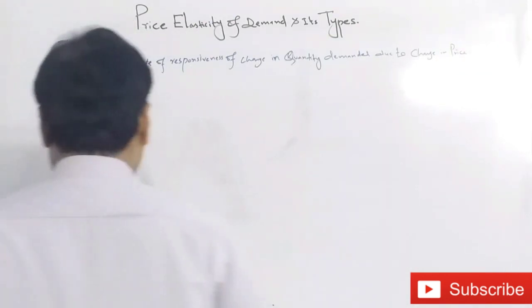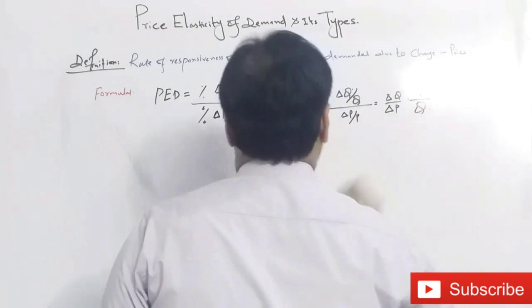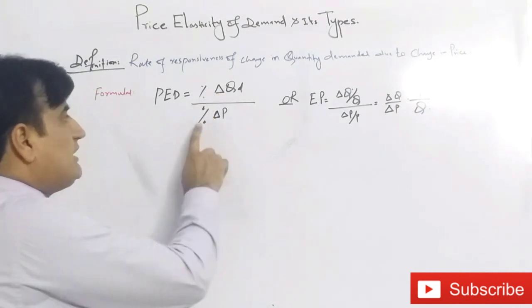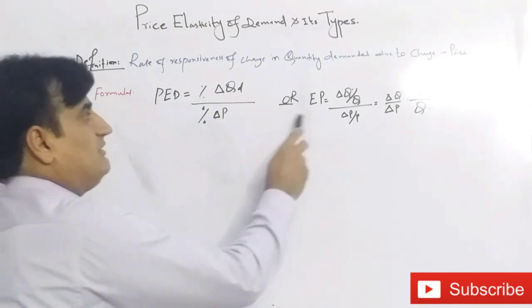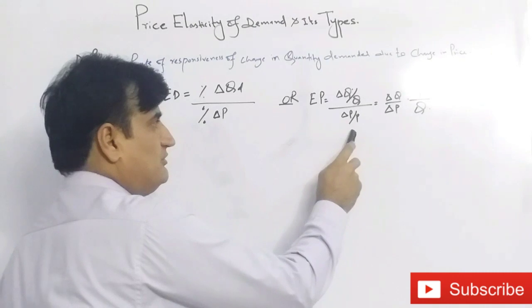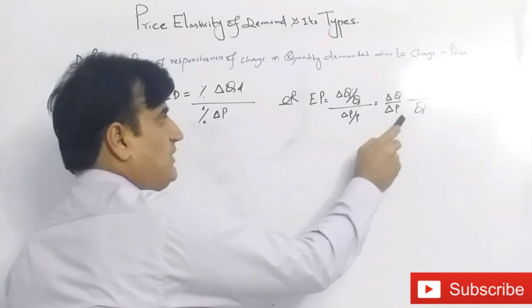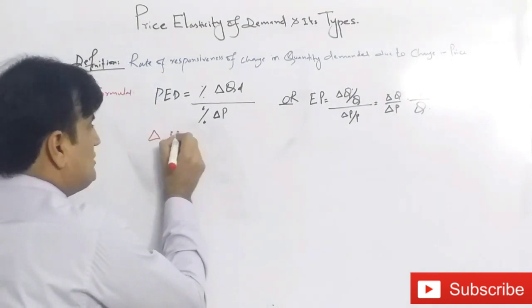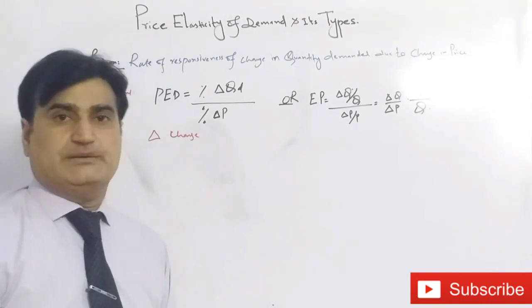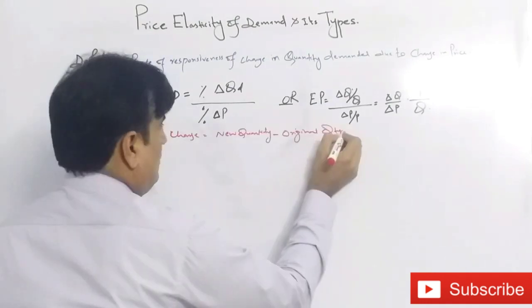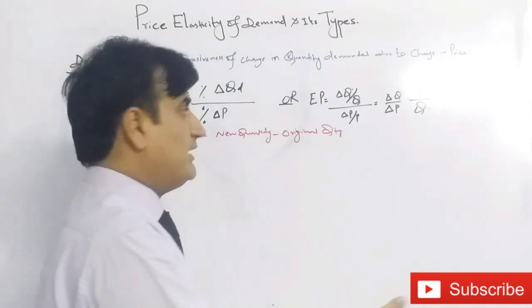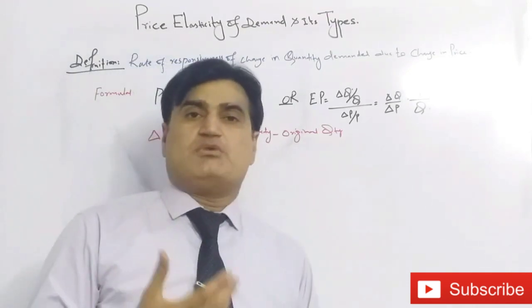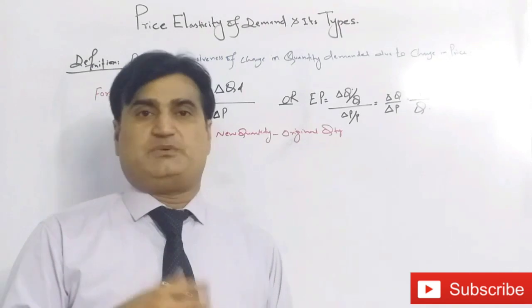The formula for Elasticity of Demand is: percentage change in quantity demanded divided by percentage change in price, which equals change in quantity over quantity divided by change in price over price, which equals change in quantity over change in price multiplied by P over Q. Here, delta represents the change. Change in quantity means Q2 minus Q1, new quantity minus original quantity. Change in price means new price minus original price.